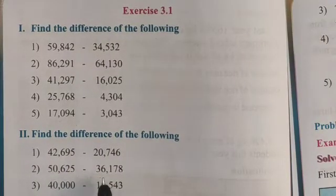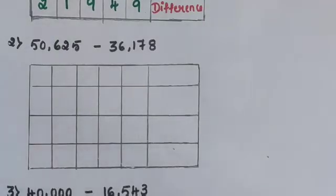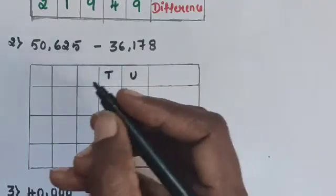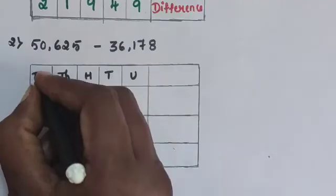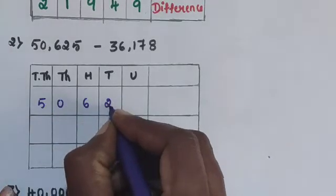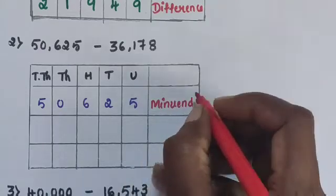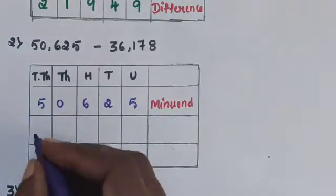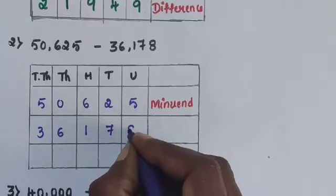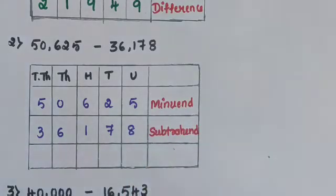Next, question number 2: 50,625 minus 36,178. Arrange the digits of the minuend and subtrahend in place value columns — units, tens, hundreds, thousands, ten-thousands. 50,625 is the minuend — the larger number — and 36,178 is the subtrahend, the smaller number. Then subtract as usual.